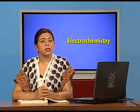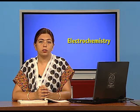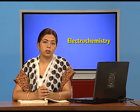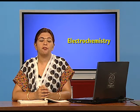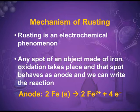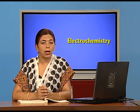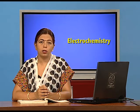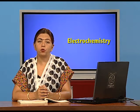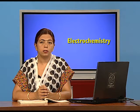When an iron article comes in contact with air and moisture, it develops a brown coating — the rust. Chemically, rust is hydrated ferric oxide. Any point on the iron surface that first contacts air and moisture acts as the anode, where oxidation (loss of electrons) takes place. The iron at that point loses electrons and is oxidized to the ferrous state.